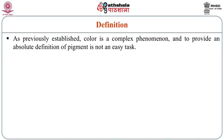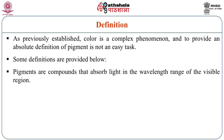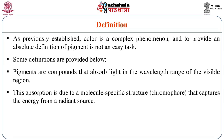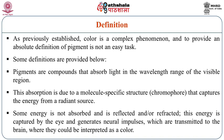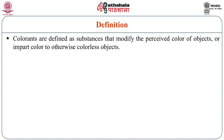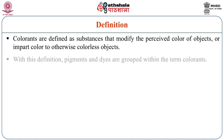As we already know, color is a complex phenomenon and to provide the absolute definition of pigment, it is not an easy task. Pigments are compounds that absorb light in the wavelength range of the visible region. This absorption is due to the molecule-specific structure — the chromophore — that captures the energy from a radiant source. Some energy is not absorbed and is reflected or refracted, and this energy captured by the eye generates neural impulses which are transmitted to the brain where they can be interpreted as a color. Colorants are the substances which modify the perceived color of objects or impart color to otherwise colorless objects.